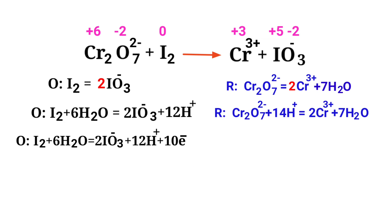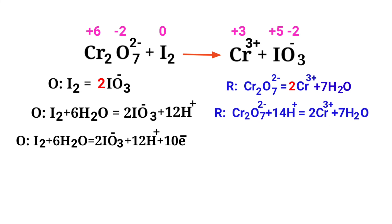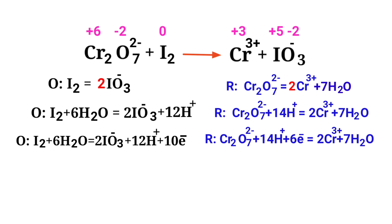Now balance the charges in the reduction half reaction. Both sides are not equal, so add 6 electrons to the left side to make it equal to +6. Now the charges are equal in the reduction half reaction.